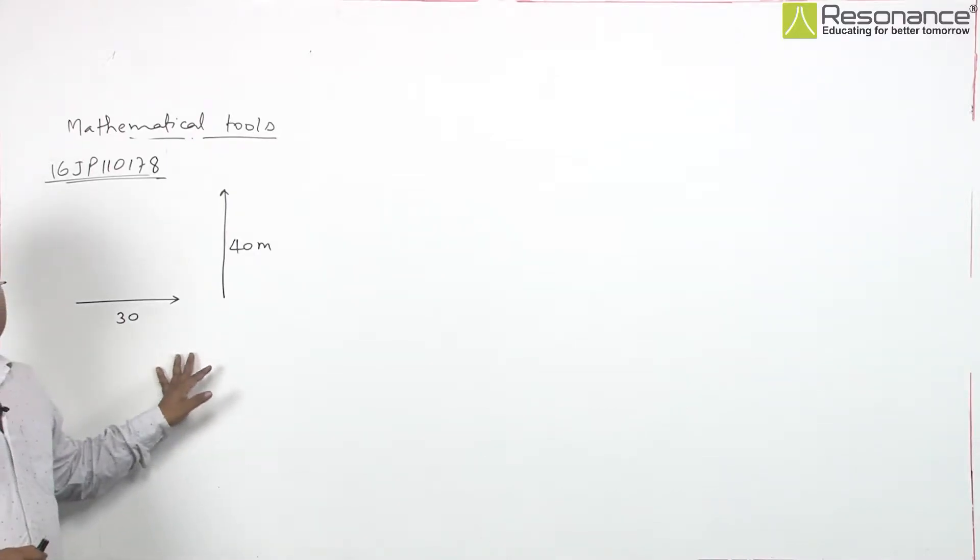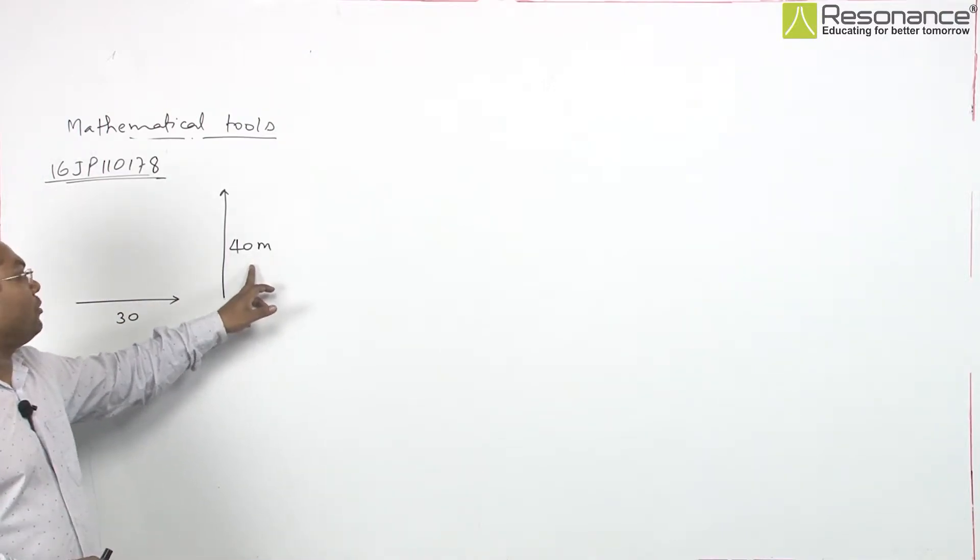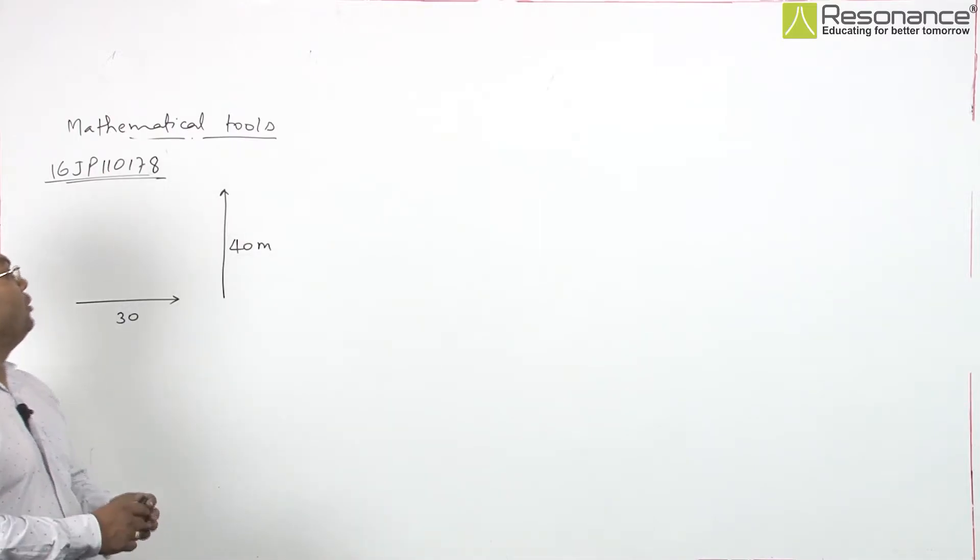In this question, we have two vectors: one having magnitude 30 meters along direction east and another having magnitude 40 meters along north. We have to add these two vectors.